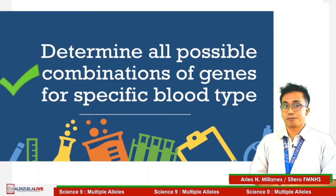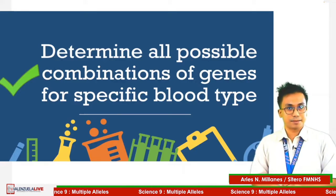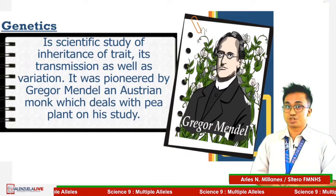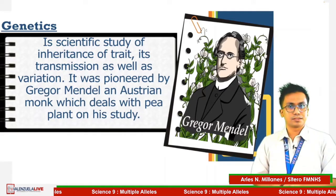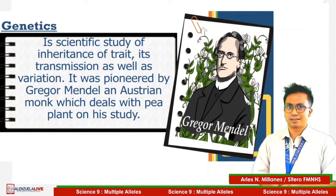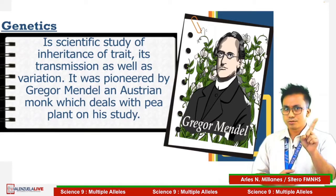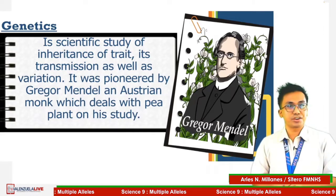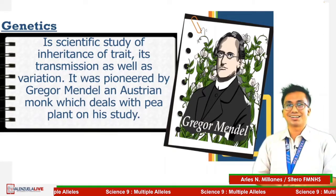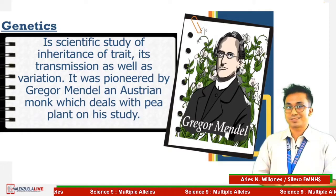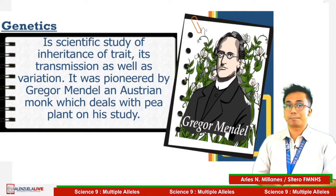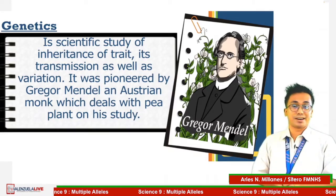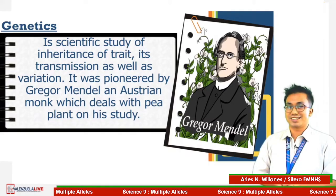To begin, let us recap first what we have learned last time. Genetics is the scientific study of transmission of traits and its variation. It is a key for us to understand why we acquire and do not acquire such traits from our parents. It was pioneered by Gregor Mendel, an Austrian monk, famous for his breakthrough experiment in pea plants that proves the transmission of genes and traits from parents down to their offspring on each generation.